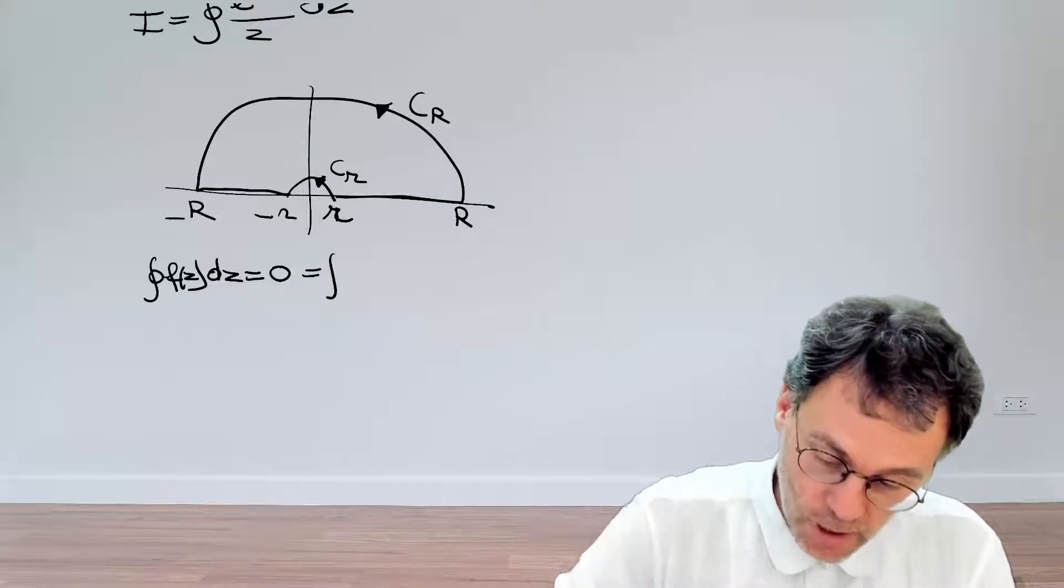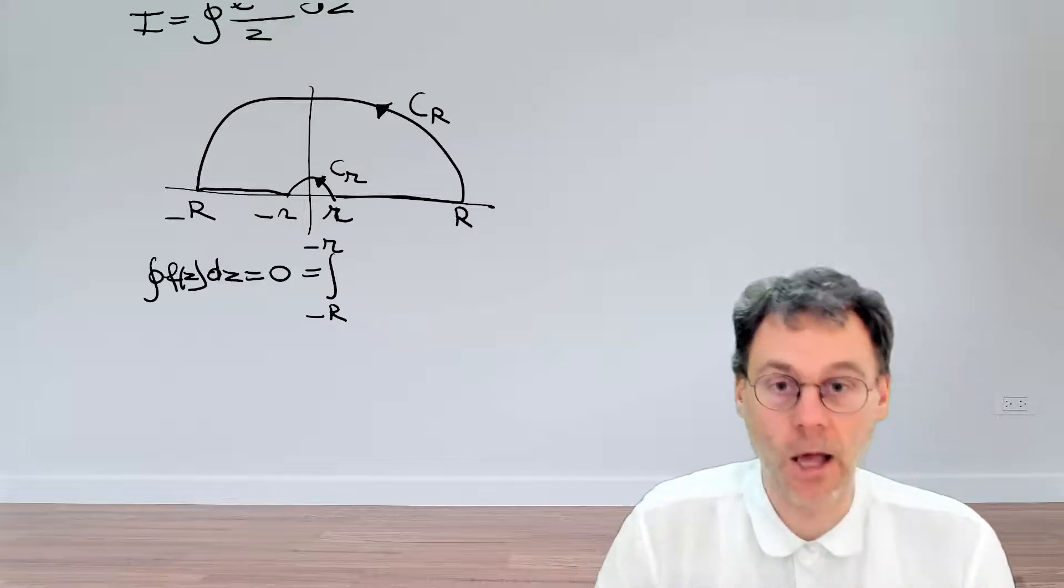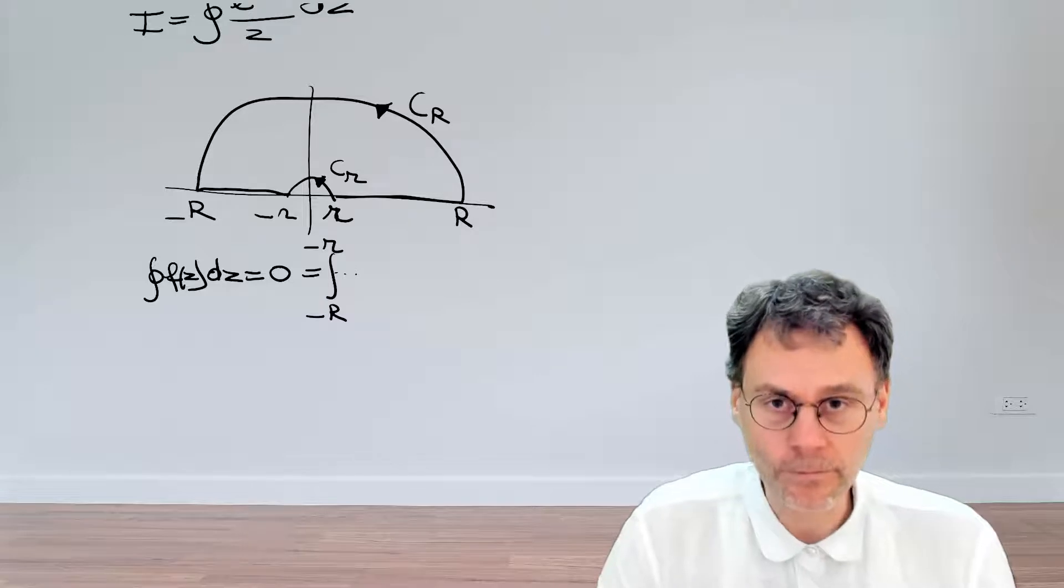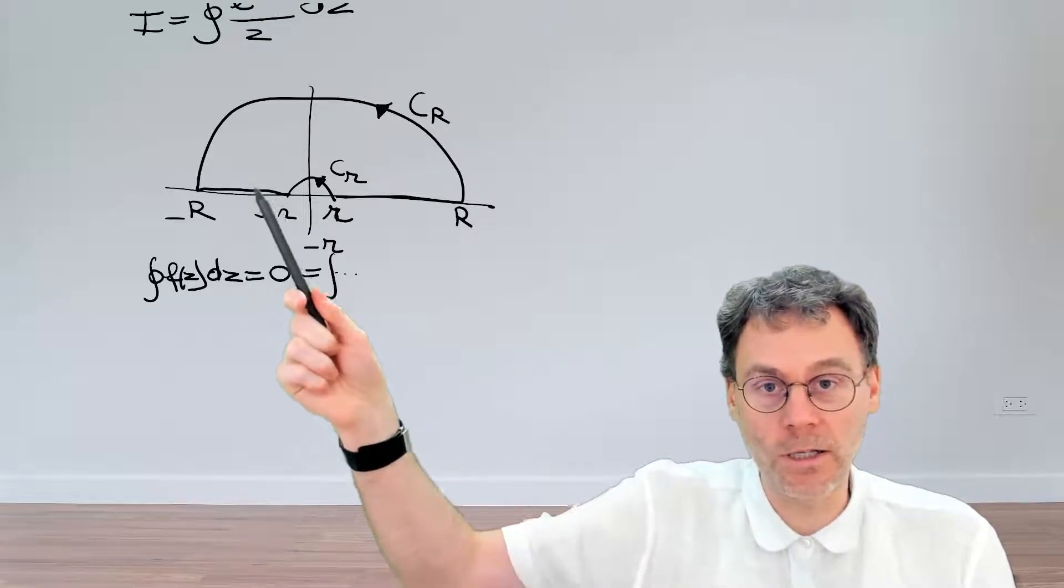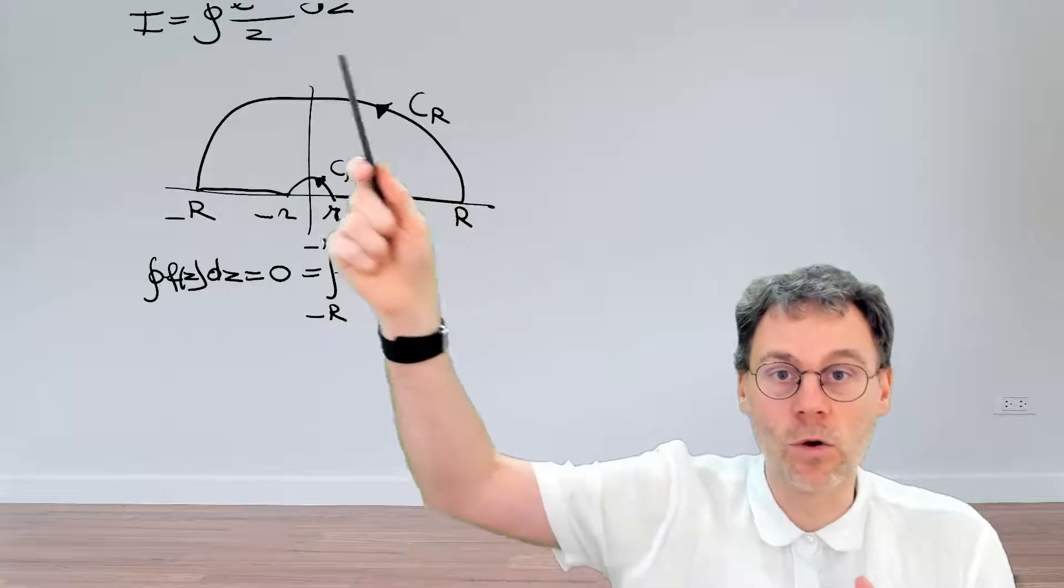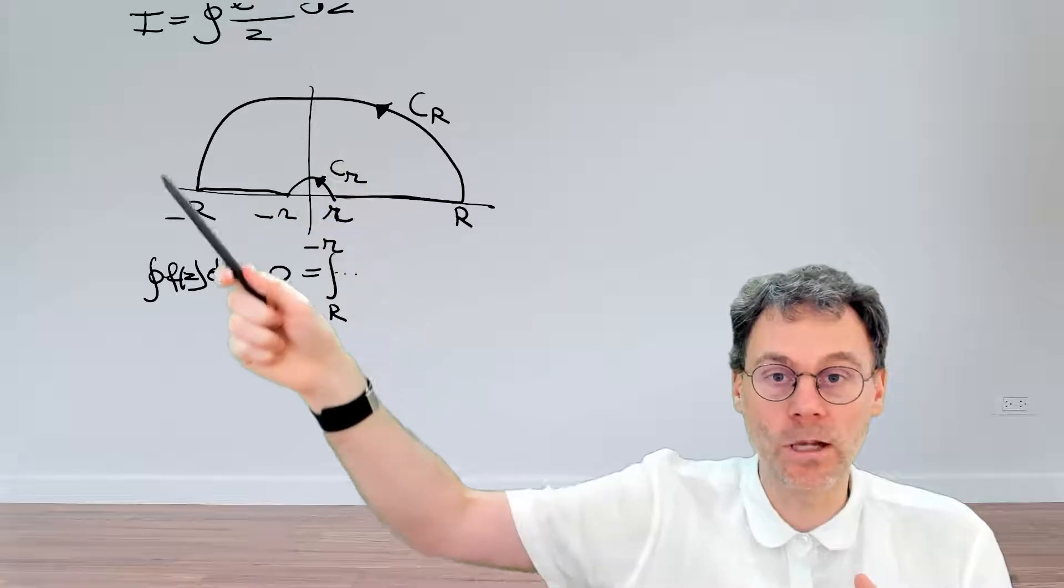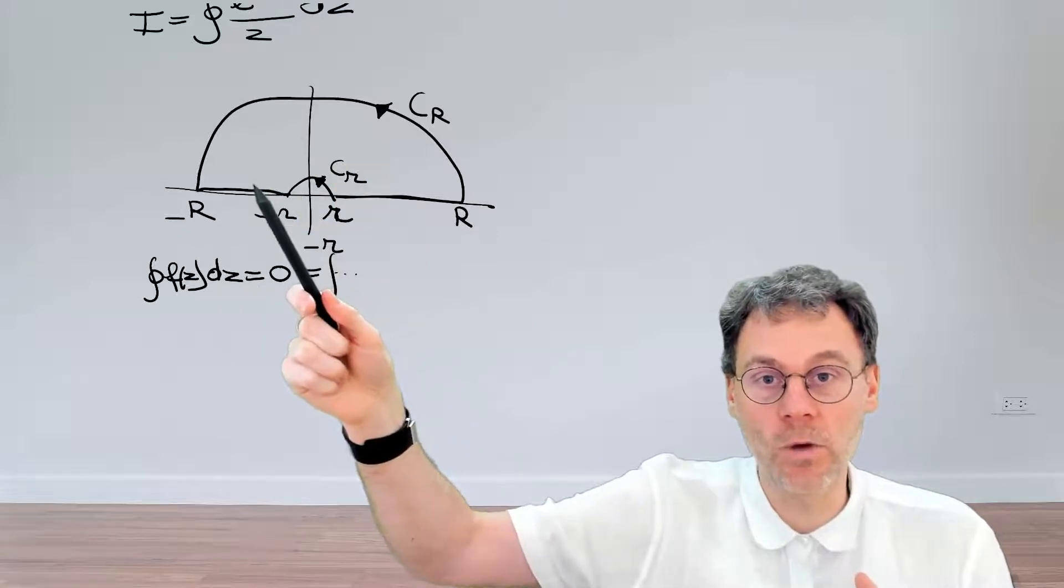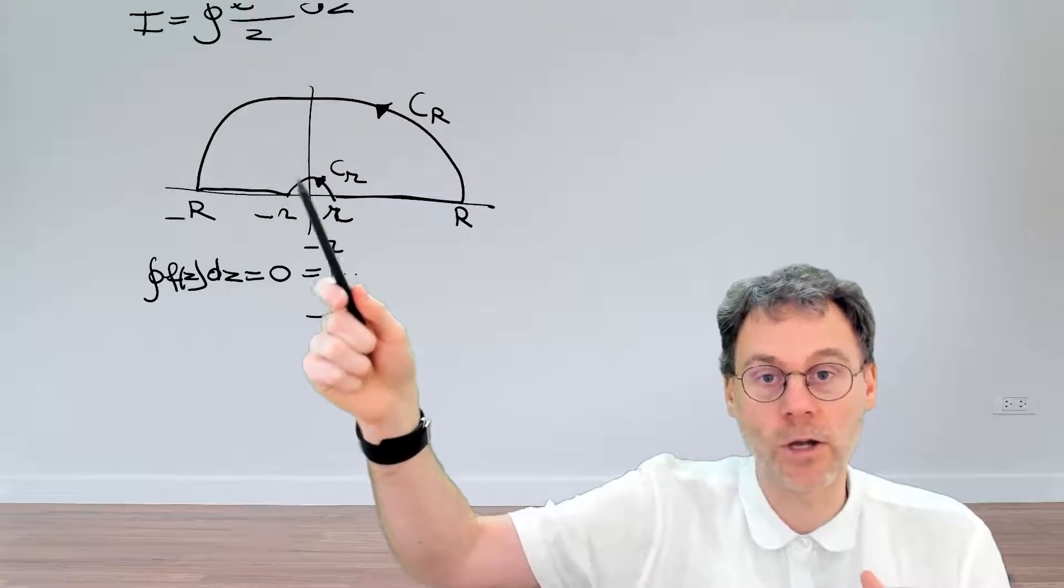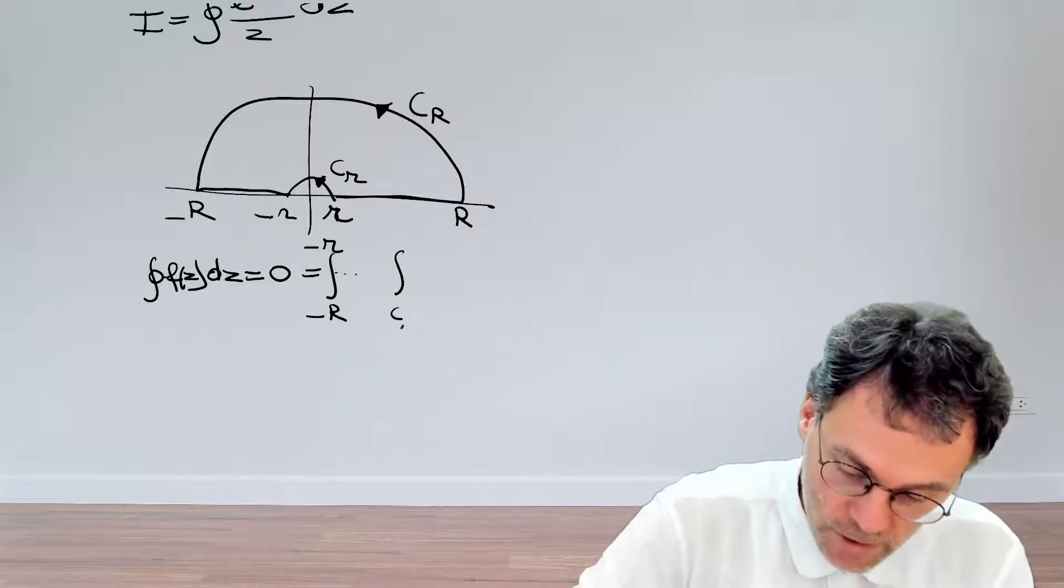The first contribution is the integral along the negative real axis. And I'm a bit too lazy to write down the integrand here. Next contribution is this little circle over here. Now, of course, also here in this case, the whole contour is taken positive in the counterclockwise direction. So this means that by the time we arrive here,